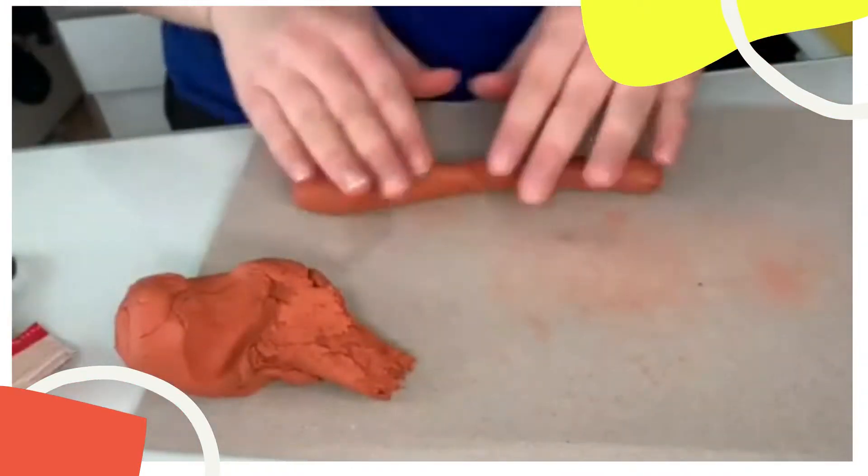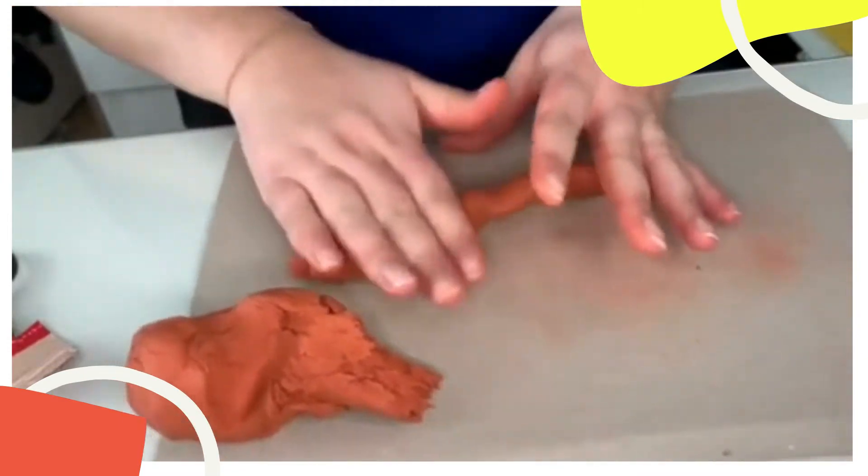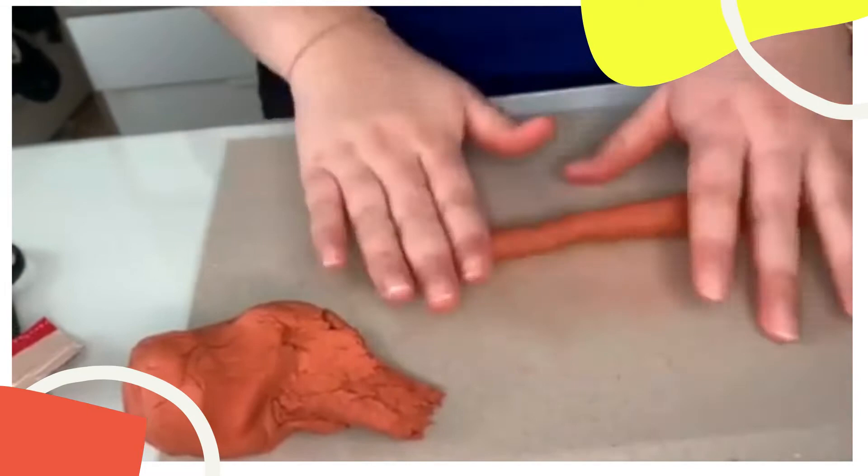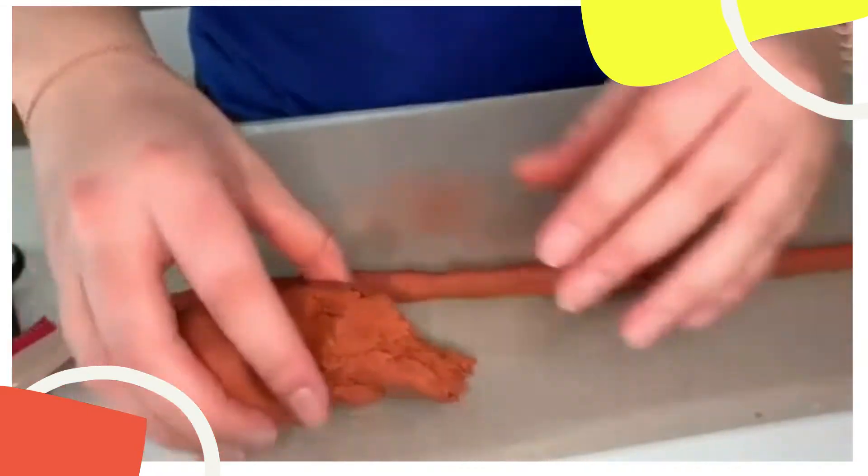I rolled it into a ball and then kneaded it for a bit and started to roll it into my little snake rolls. When you knead it, it helps and makes it a lot easier to actually make your little snakes.